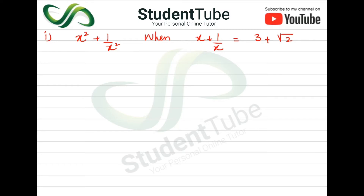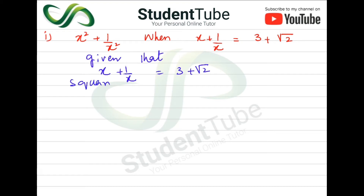Let's start — it is very easy. First of all, what is given: x plus 1 upon x is equal to 3 plus under root 2. So here we will square both sides to find x squared plus 1 upon x squared.